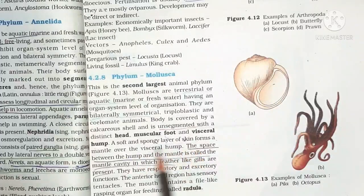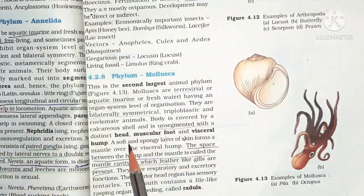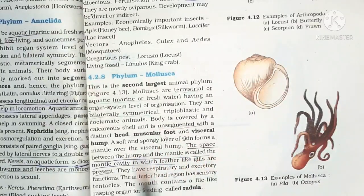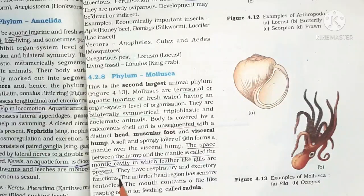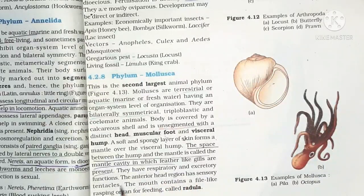A soft spongy layer of skin forms a mantle over the visceral hump. The space between the hump and the mantle is called the mantle cavity, where feather-like gills are present with respiratory and excretory function. The anterior head region has sensory tentacles and a file-like rasping organ for feeding called the radula.